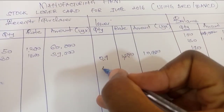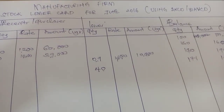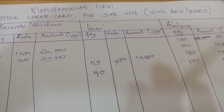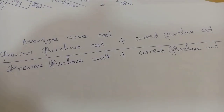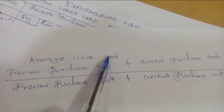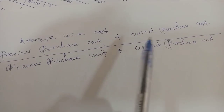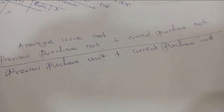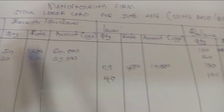On the 10th there were issues of 40 units. Since this is the average cost method, we need to calculate the average rate. The formula is: previous purchase cost plus current purchase cost, divided by previous purchase units plus current purchase units. The previous purchases are the opening balance and the 3rd purchase; the current one is the most recent purchase made on the 5th.